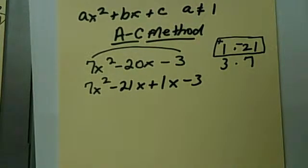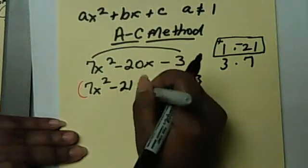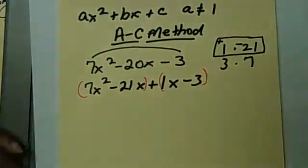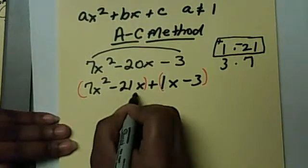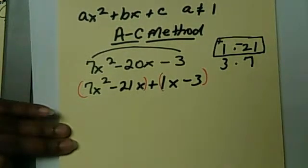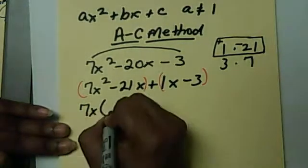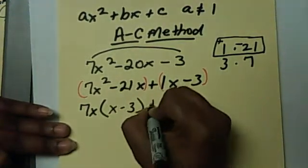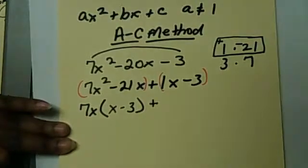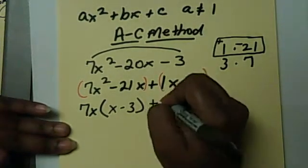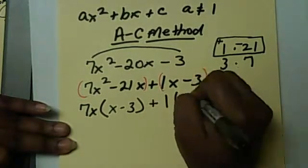Then since we have four terms, we're going to factor by grouping, which is what you learned first. So in factoring by grouping, we group the first two terms together, and then we group the last two terms. So we're going to pull out what's in common, a GCF, which is 7x, leaving us with x minus 3, plus we always have to pull out something, even if it's just the 1. So we're going to pull out a 1, and that's going to leave us with x minus 3.